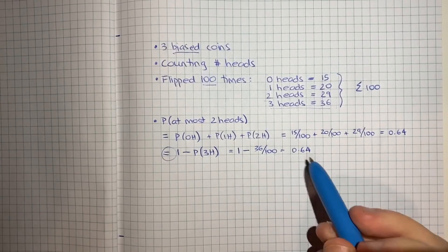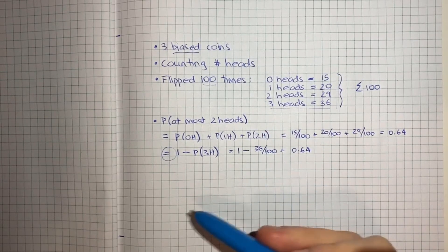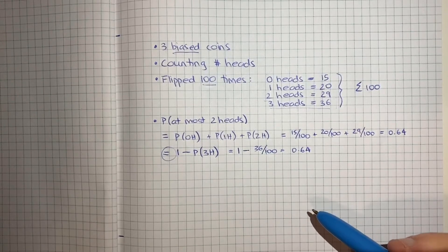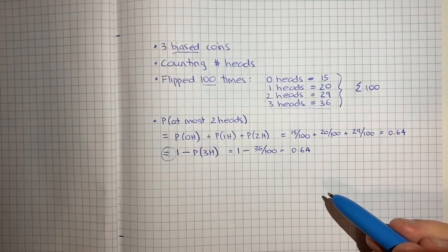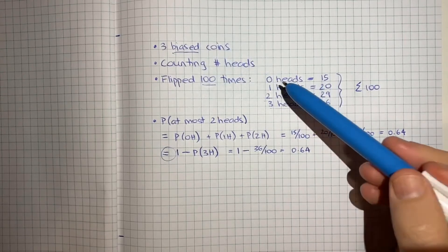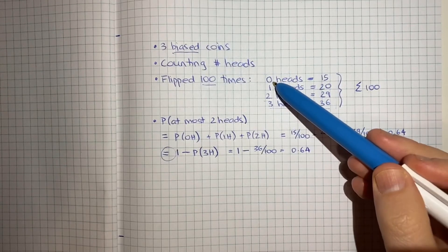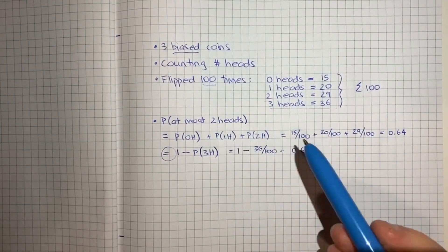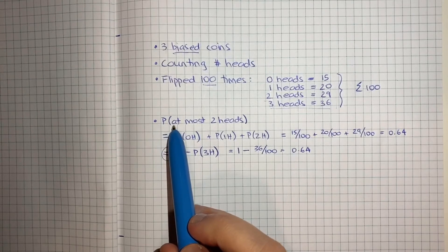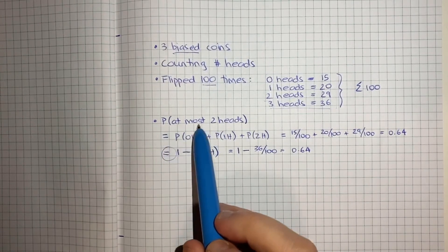So hopefully you've been able to follow that. I think with any probability question, some of the key things to remember or think about is the probability of every possibility is always going to add up to one.